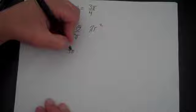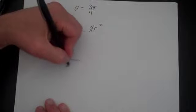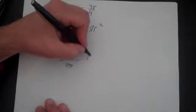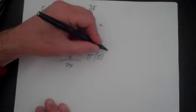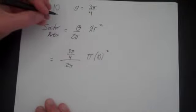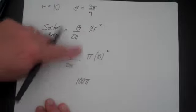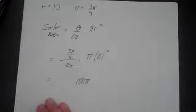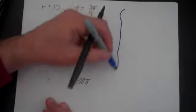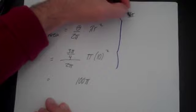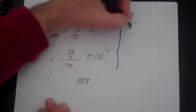That's going to be 3 pi over 4 over 2 pi times pi times 10 squared. And this part is easy, that's just going to be 100 pi. This is a little more difficult, so let's actually work over here on the side for a minute.